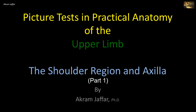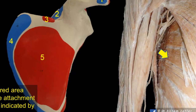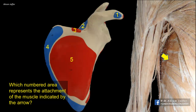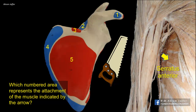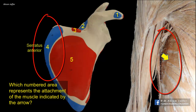Now I will deal with the shoulder region and axilla. Which numbered area represents the attachment of the muscle indicated by the arrow? This muscle is located on the lateral thoracic wall. It was given its name because of the saw-toothed appearance of its origin. In Latin, serratus means a saw. You can see here that the muscle has digitations by which it arises from the ribs. The muscle forms a flat sheet that is attached to the anterior aspect of the medial border of the scapula. So the numbered area that represents the attachment of the muscle is four.